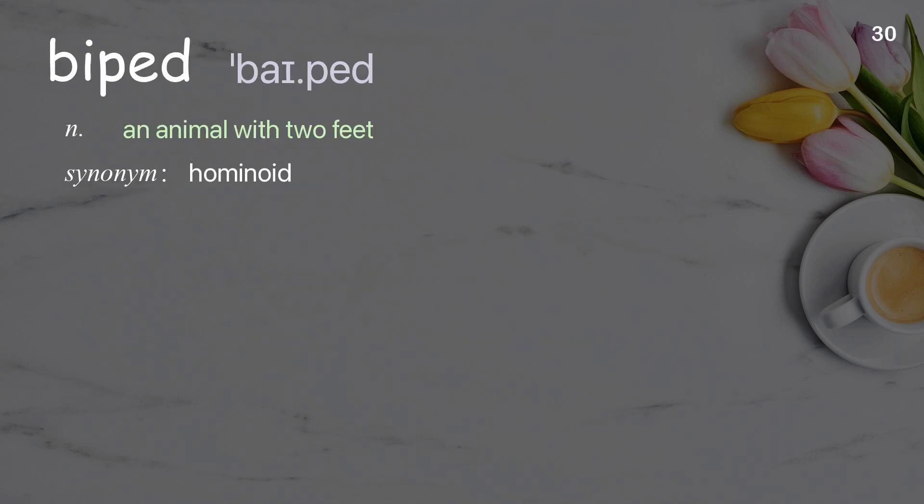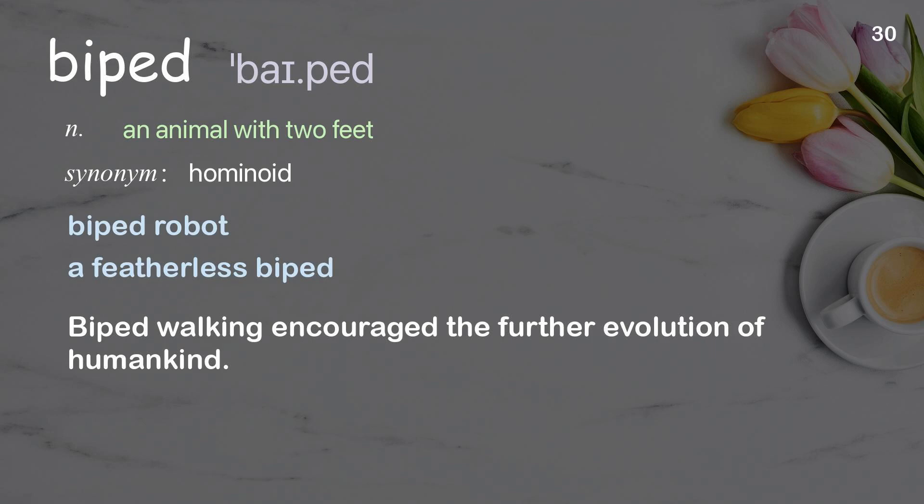Biped: an animal with two feet. Examples: biped robot, a featherless biped. Biped walking encouraged the further evolution of humankind.